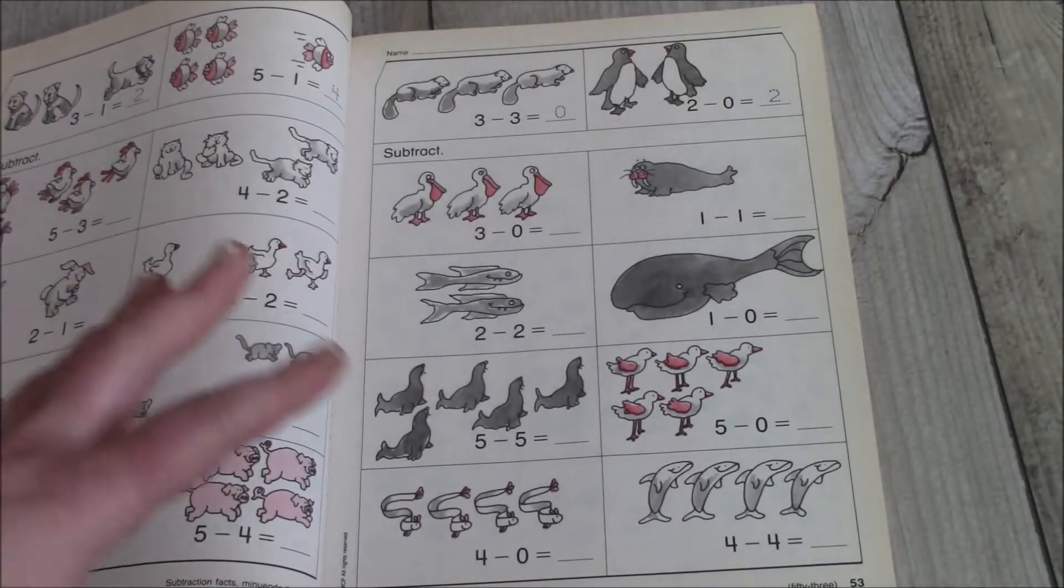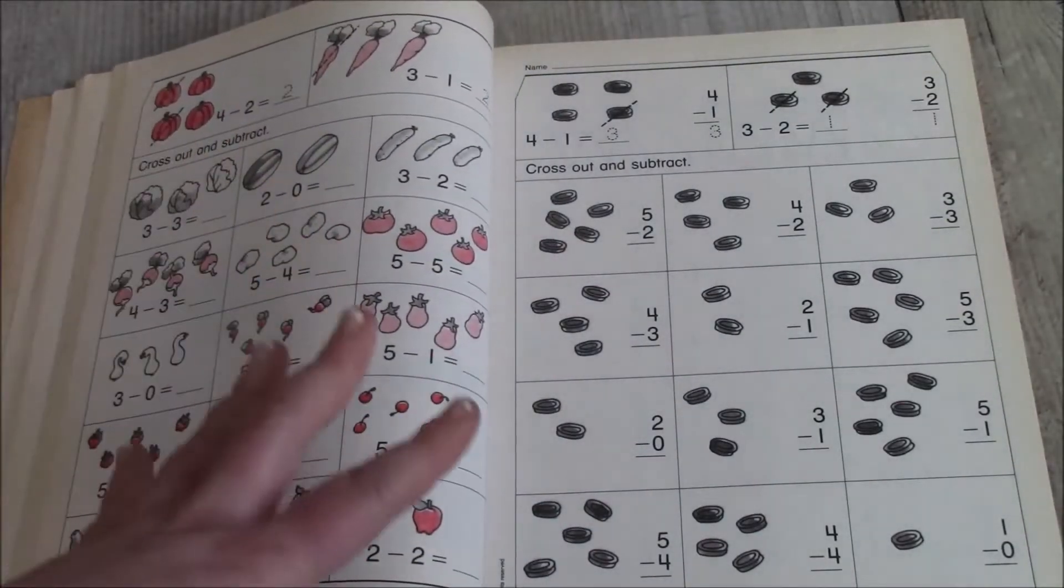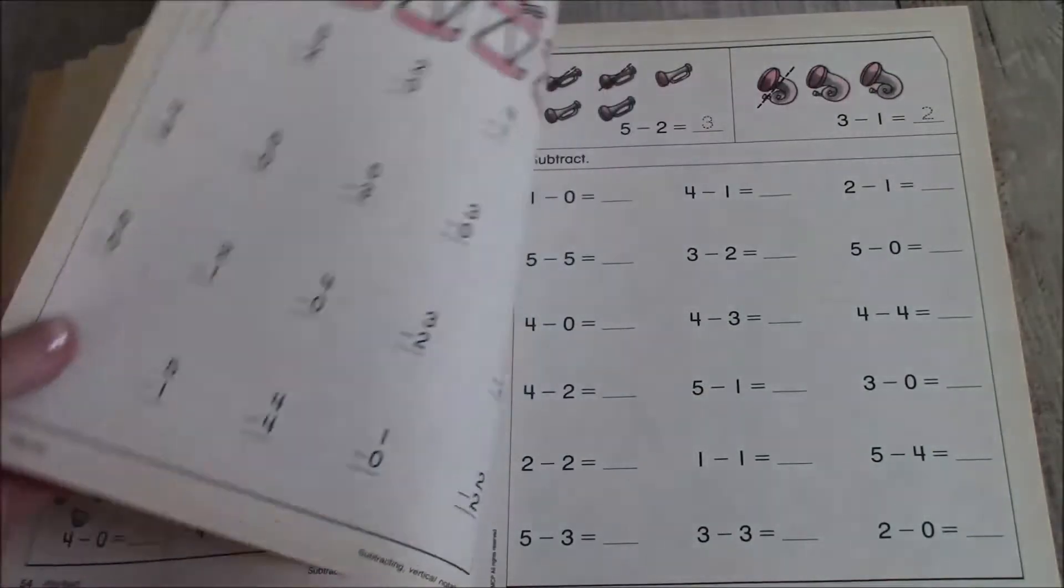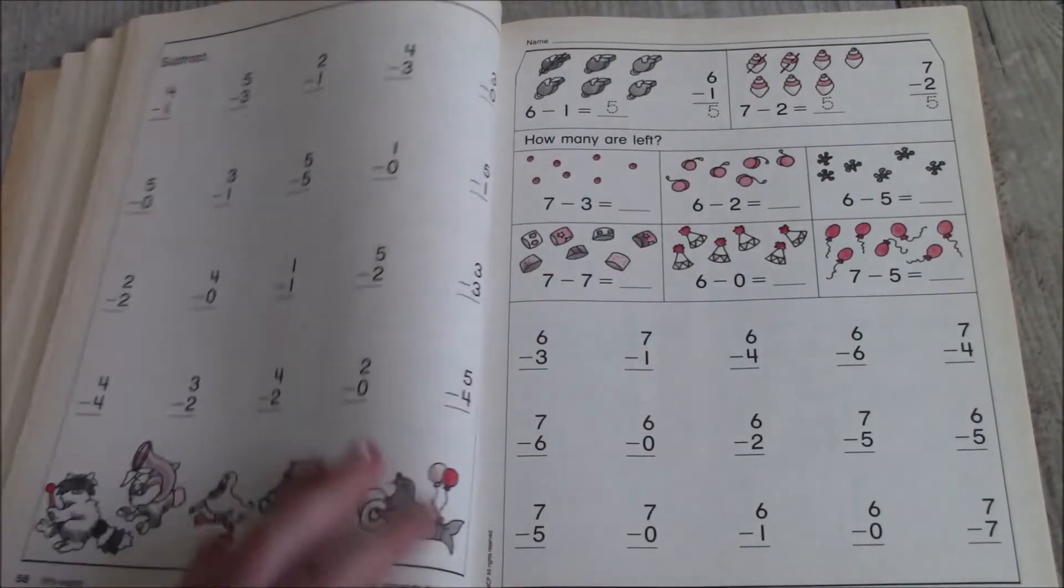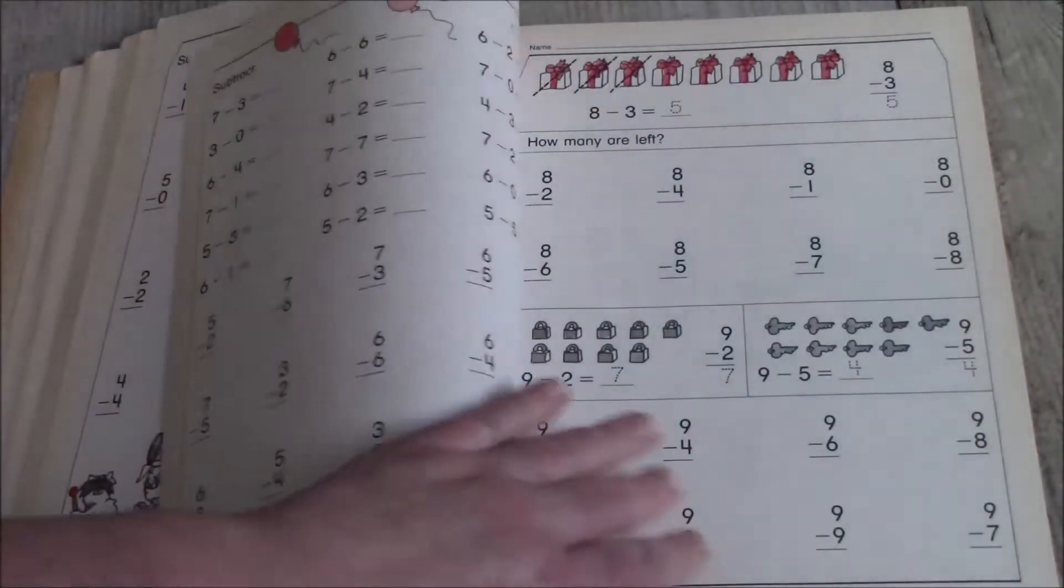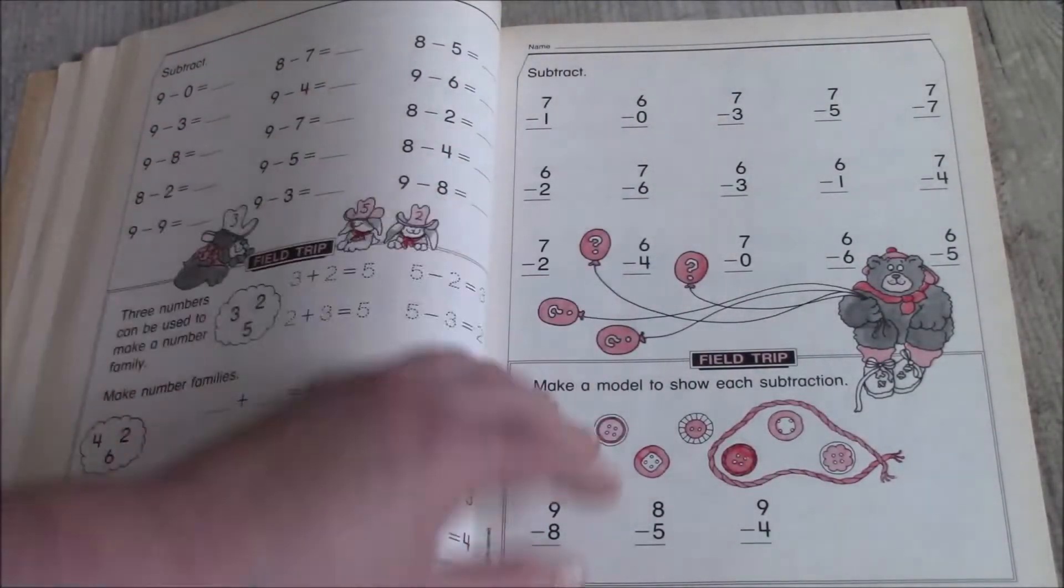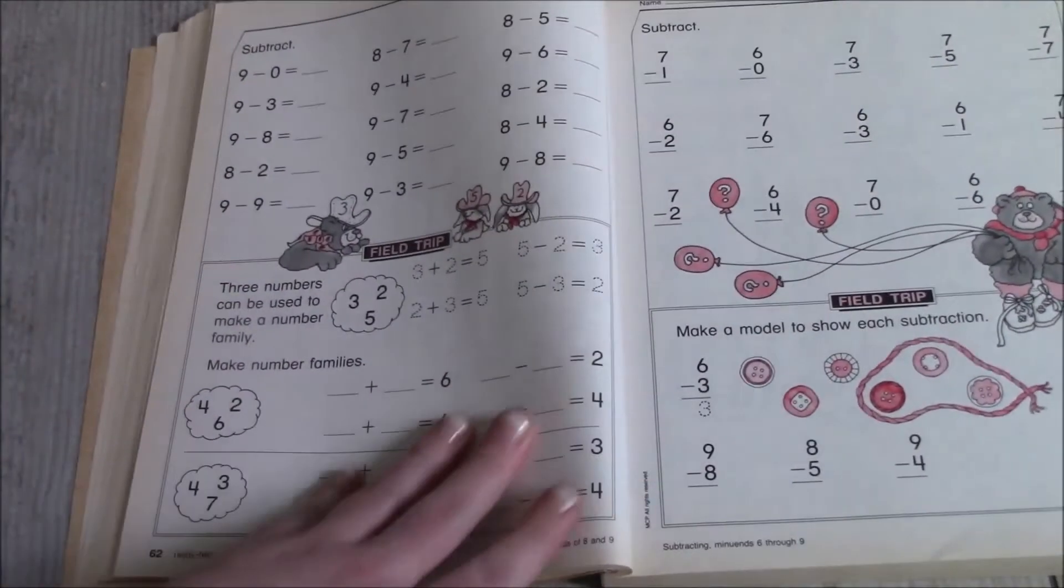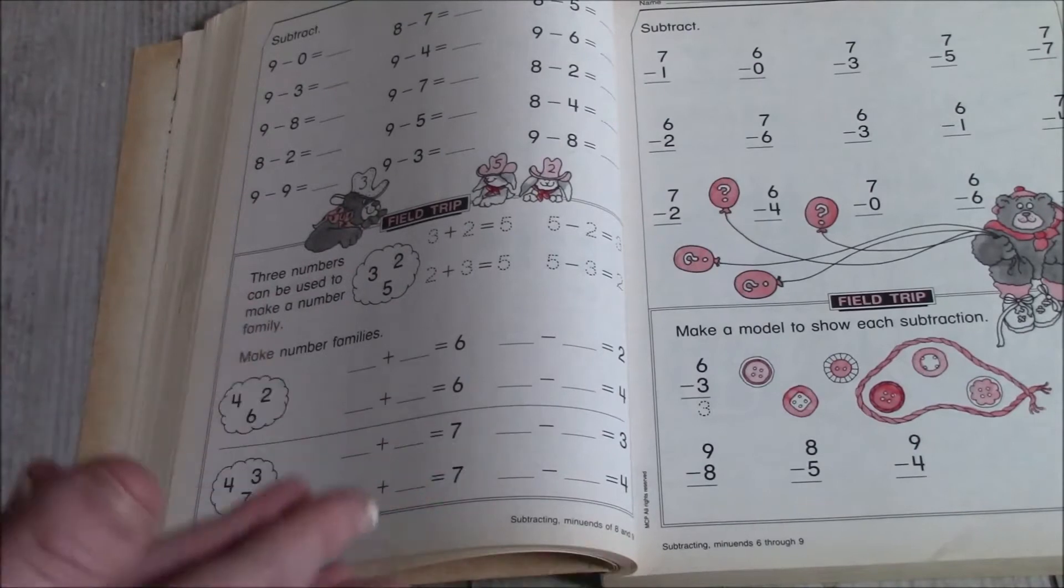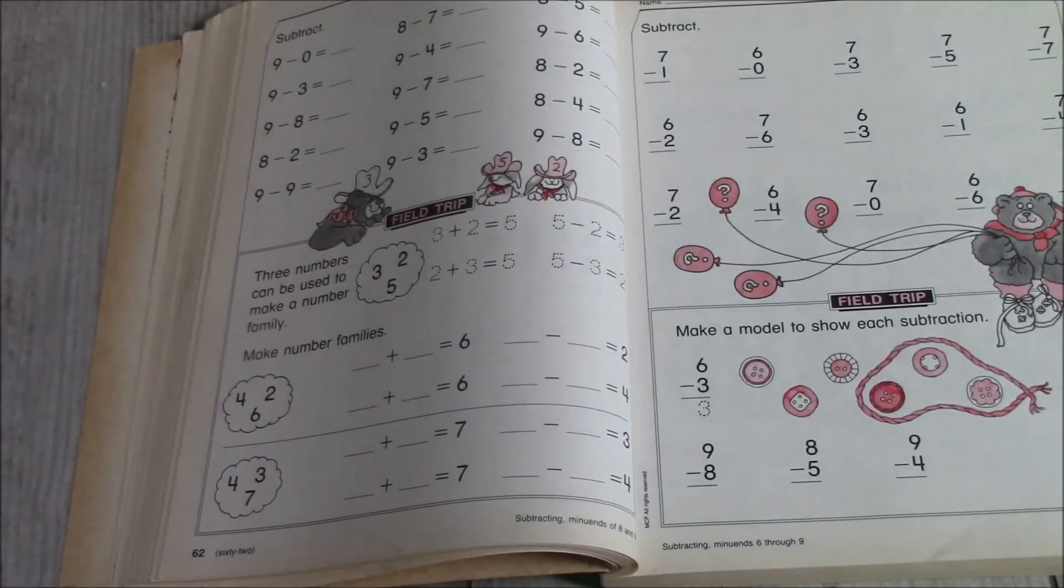So we'll move on to new concepts as we finish our work. So we went from plus to minus or addition to subtraction. Now, these books do have what is called a field trip and they're like extra fun to do or extra fun kind of work to do if they need it.